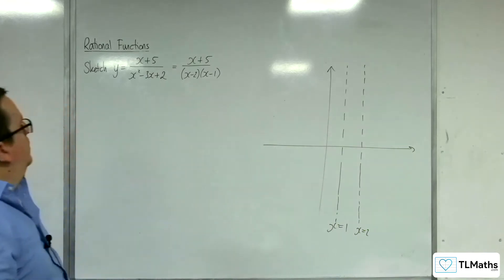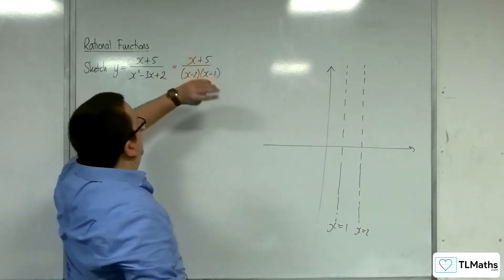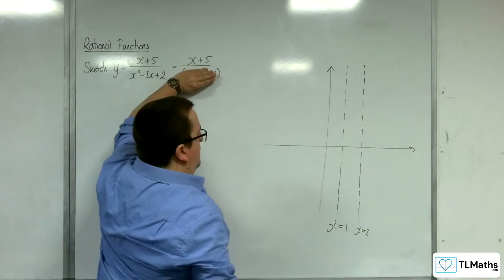Okay, right, and where is it crossing the x-axis? That's when the numerator is 0, so that's minus 5.